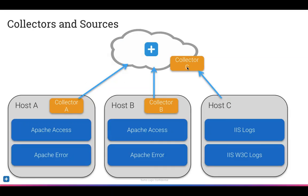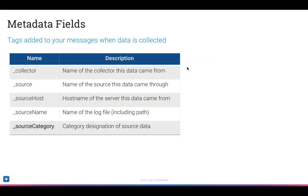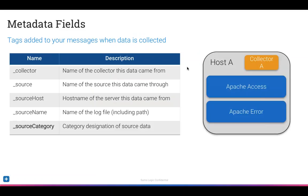A couple of things to keep in mind: every single log message that comes into Sumo Logic gets tagged with metadata fields. Every message gets tagged with the name of the collector it came from, the source where that data came from — in this case it could be Apache Access or Apache Error — the source host (in this case, host A), and the source name, which is the name of the log file including the file path.